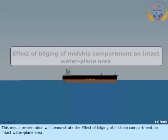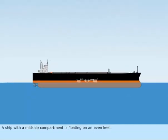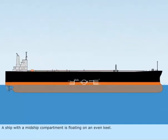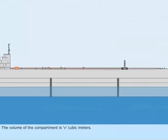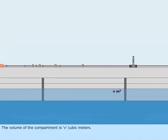This media presentation will demonstrate the effect of bilging of a midship compartment on intact waterplane area. A ship with a midship compartment is floating on an even keel. The volume of the compartment is V cubic meters. The midship compartment is bilged below the waterline.